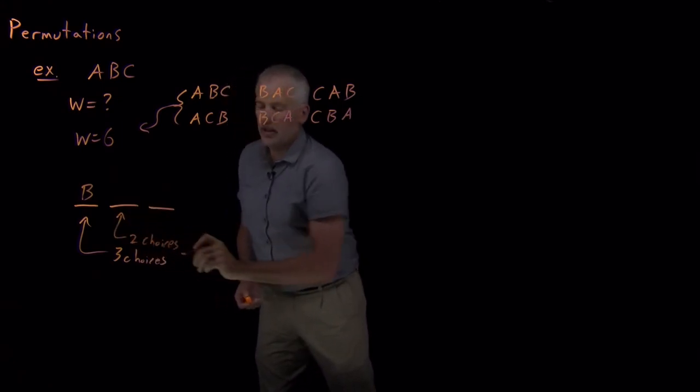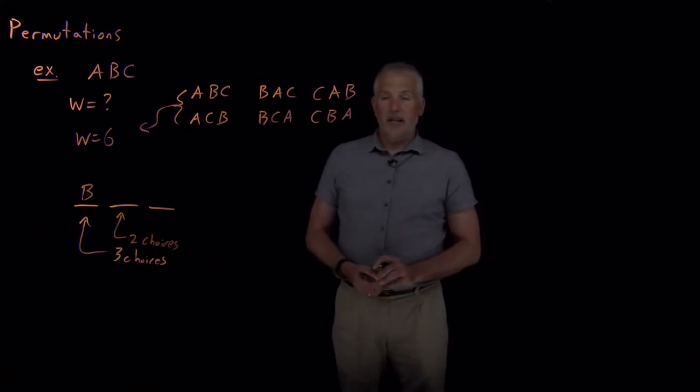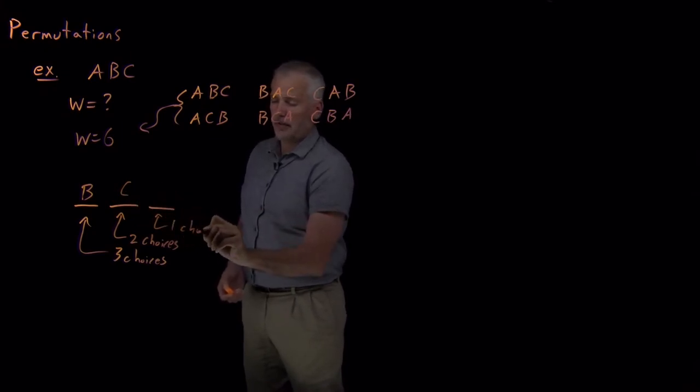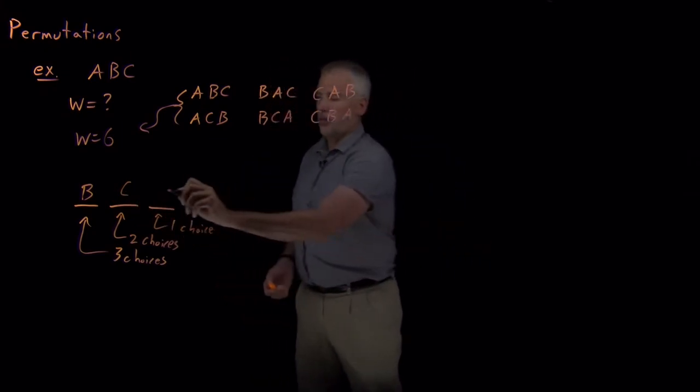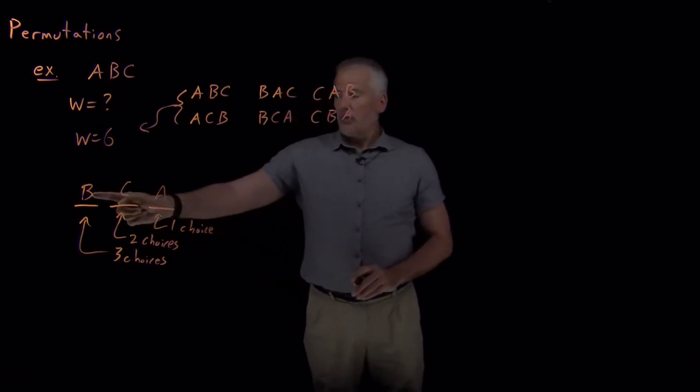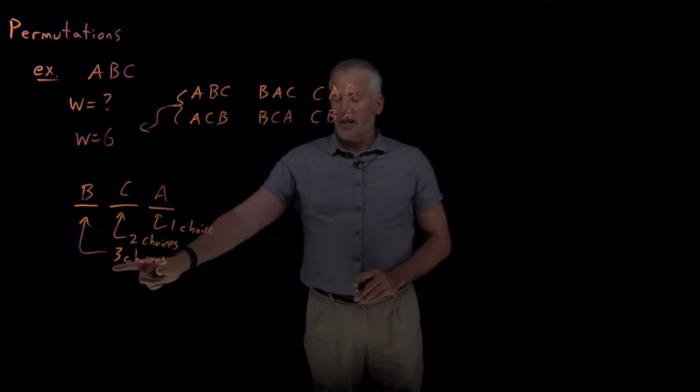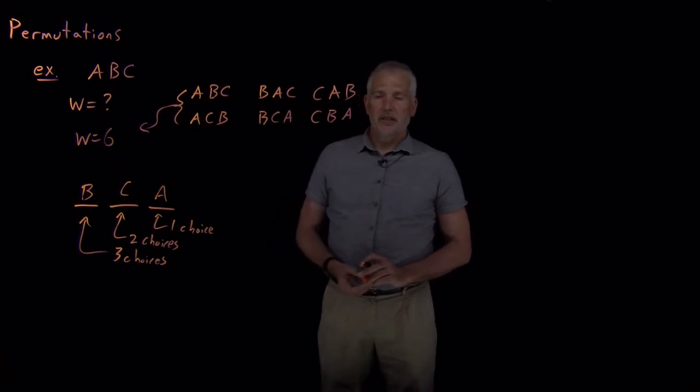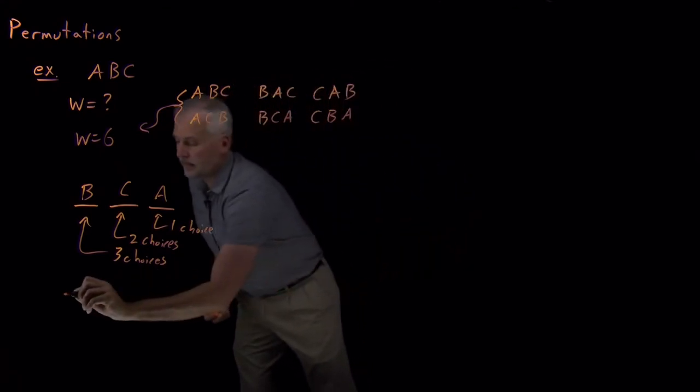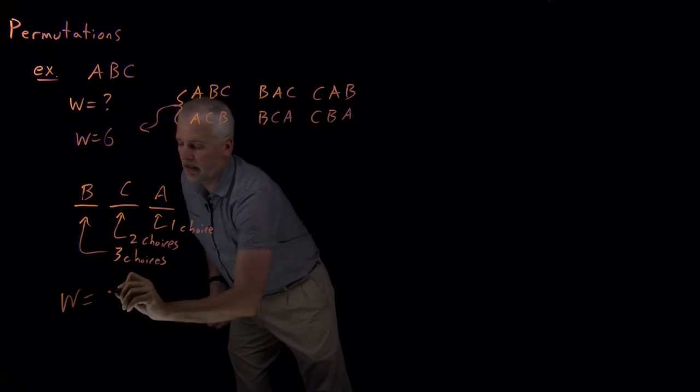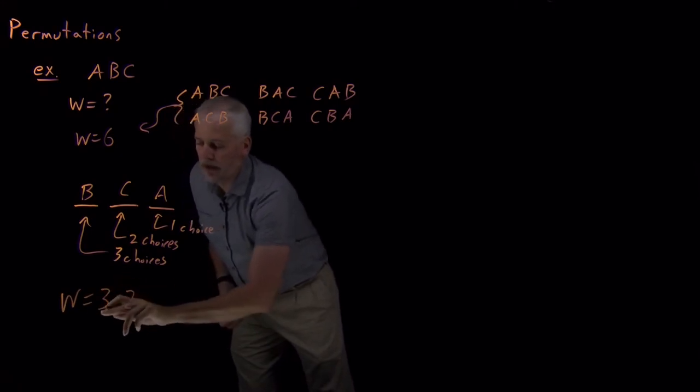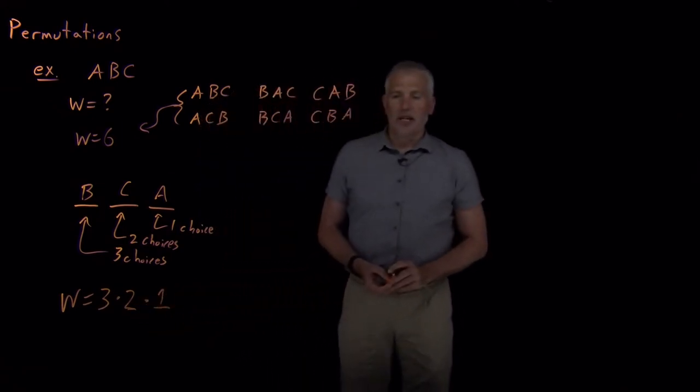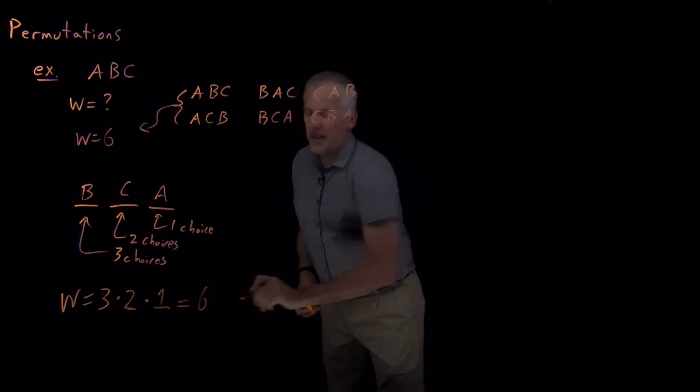Once I had put a letter there, maybe an A or maybe a B or maybe a C, whichever letter I decided to put there, that used that letter up. There's only two choices left for the second slot, and then once I've written those two down, there's only one choice left for what to put in the last slot. So the reason I have a total of six different permutations is three choices to make, and then for any one of those, I could have made two other choices. And then for any one of those, there was only one choice left in the last slot.